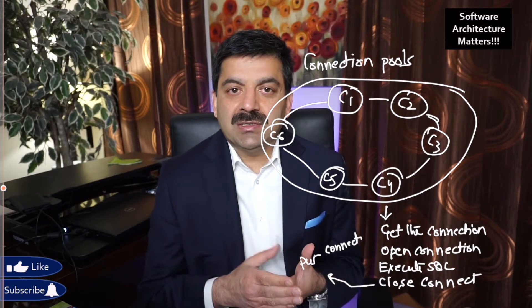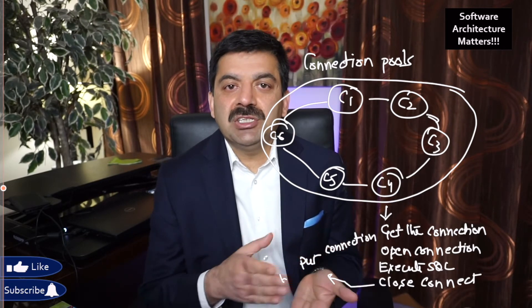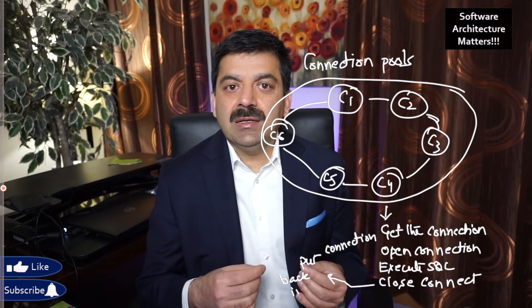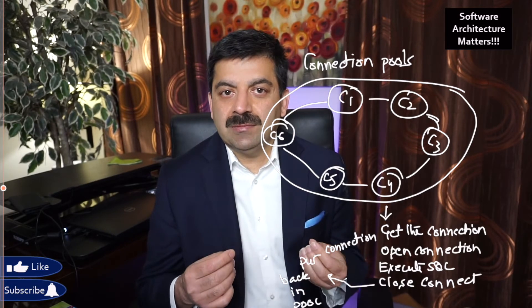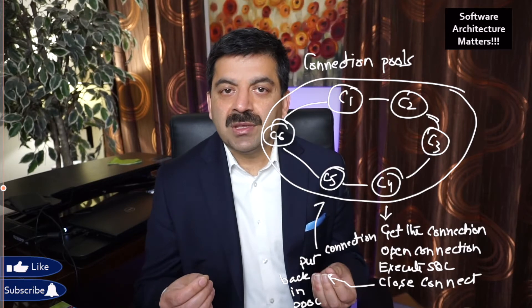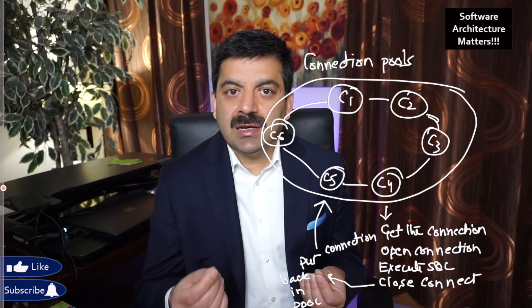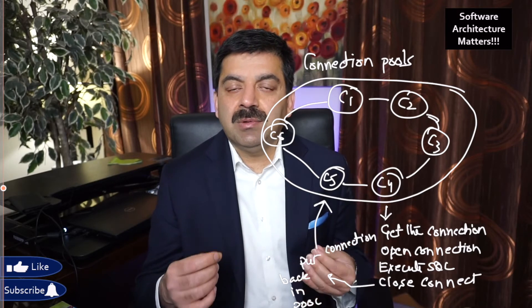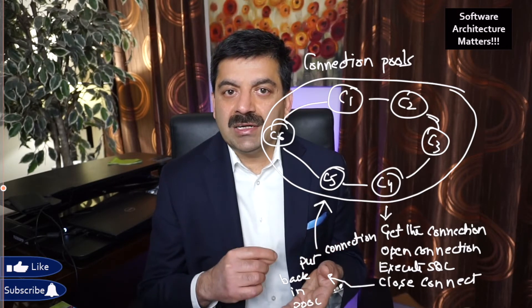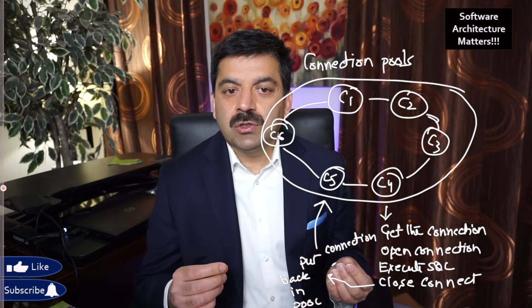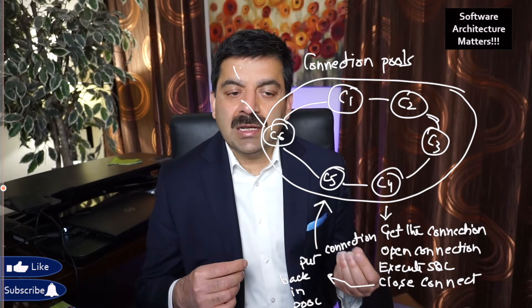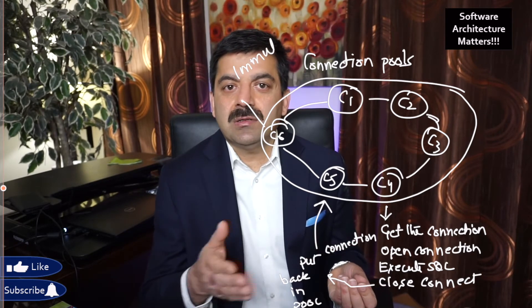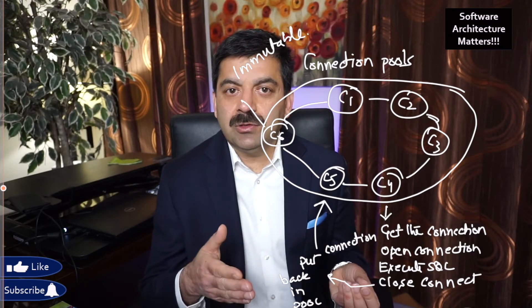Eric says in domain-driven design that value objects are immutable — you cannot change their state. They should be easily replaceable by another value object. When you're using a connection object from the pool, you should not change it so that it becomes different from the rest of the pool. The next time you need a connection, you just get a new copy of the value object and use it without any problem.